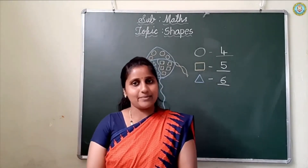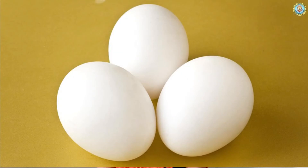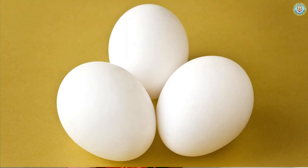Okay, my dear children. Some examples of ovals are: look at the screen — egg. An egg has the oval shape. Got it, children?